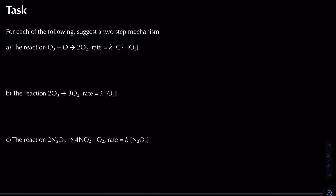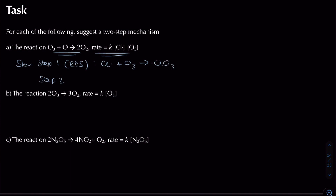Moving to the trickier problems — the decomposition of ozone. The rate equation is: rate = k[Cl·][O₃]. In the rate determining step, chlorine radicals react with ozone forming oxygen and a chlorate radical (ClO·) intermediate. In step two, the chlorate radical reacts with ozone to form two lots of oxygen gas and regenerates the chlorine radical. Since Cl· is present at the start and end but not consumed, it speeds up the reaction — it is a homogeneous catalyst, in the same phase as the reactants.